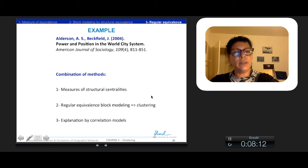Of the study, this example shows interest to use different steps in the network approach, allowing to combine different methods. So first, measure structural centrality, then regular equivalence block modeling to make clustering, and then explanation by correlation models.